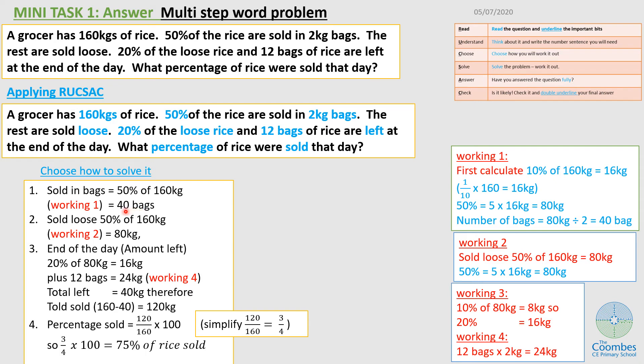Then it says if 50% were sold in bags, then the amount sold loose is also 50%. I already know that 50% of 160 is 80 kg, which is what I've shown as my working here. So I have worked out these two.